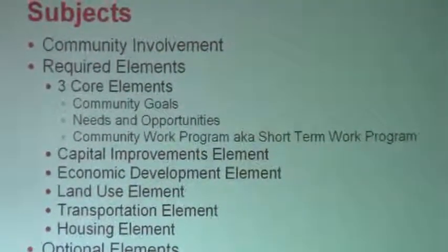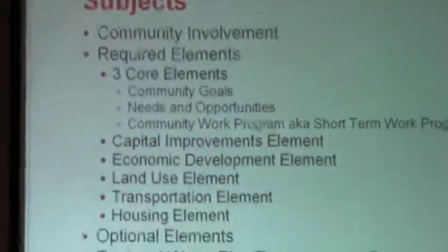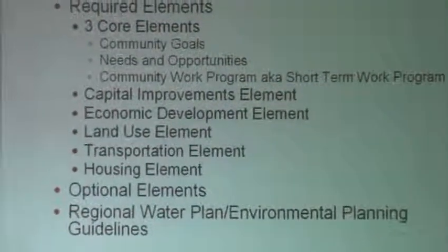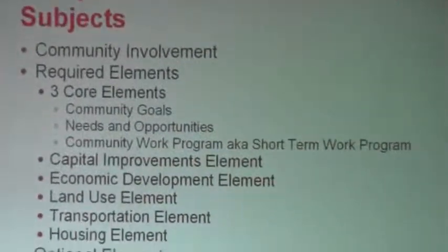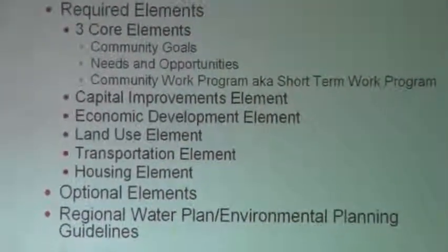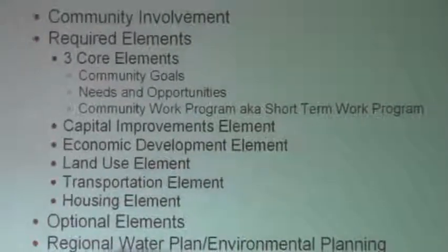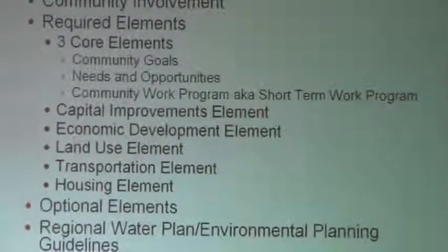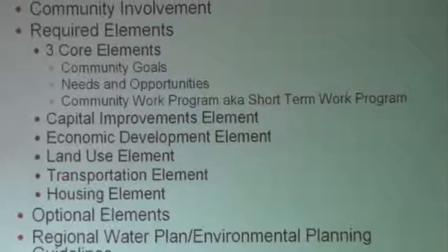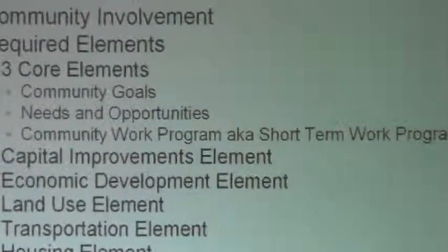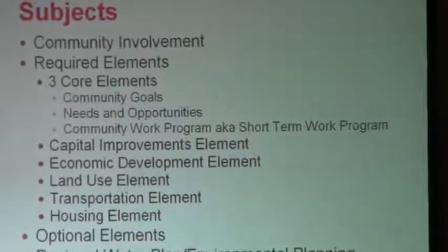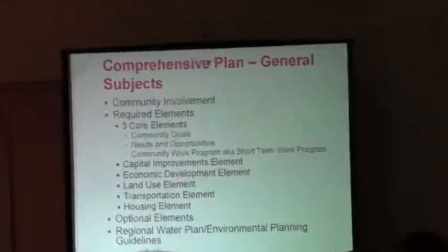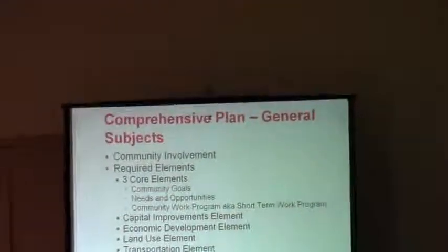There are also optional elements, including the regional water plan and environmental planning guidelines. The required elements consist of three core elements — and you'll see in a little bit why I differentiate between the core elements and the other required elements. The three core elements are your community goals, your needs and opportunities, and your community work program, which is just a different term for the short-term work program you have always been doing.